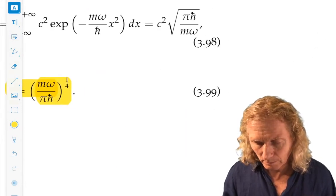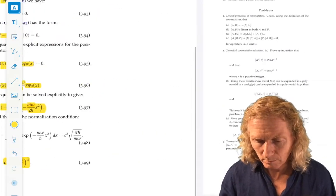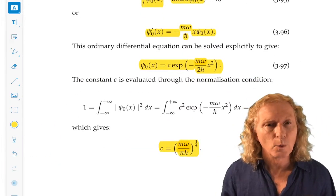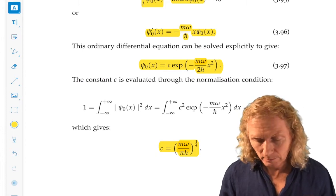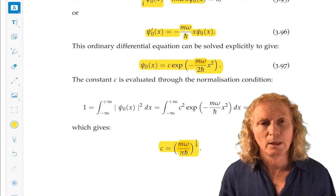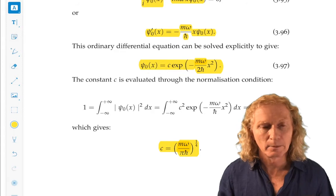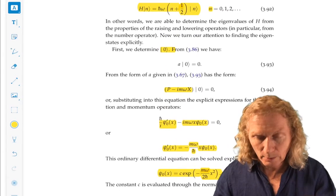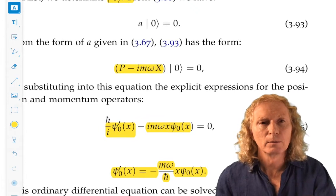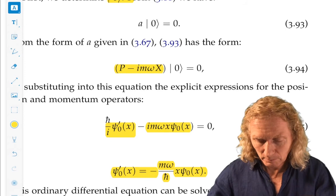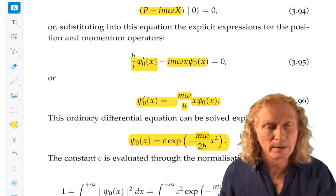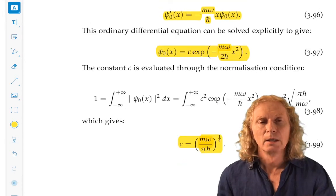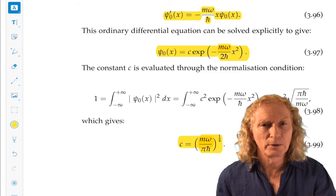And then, what you can do is you can act on that over and over again with the raising operator. And you will get all the higher eigenstates. That's the end of this chapter. Obviously, there's some details to be worked out with respect to computing eigenstates for higher than the ground state. But that's an algebraic problem. Now that we've found the ground state, it's acting on it over and over again with the raising operator. And we will do those technical details in exercises and discuss in the problems classes.